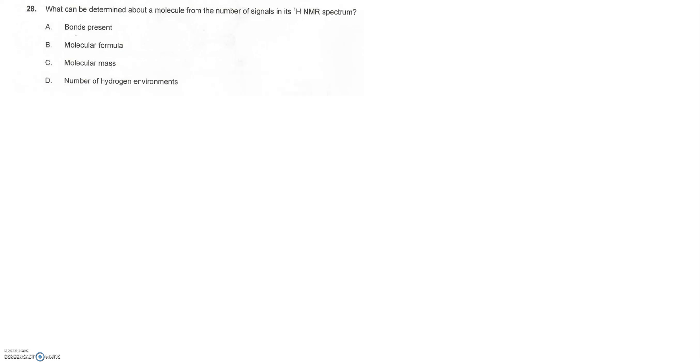If we look at the definition of HNMR, the answer is D — the number of hydrogen environments is what it can tell us from the signal.